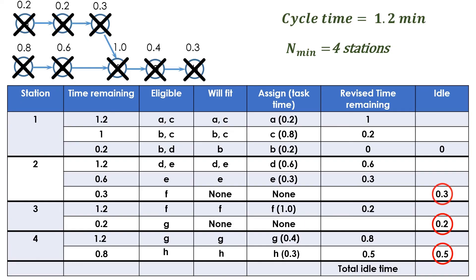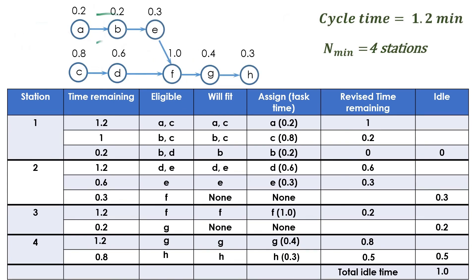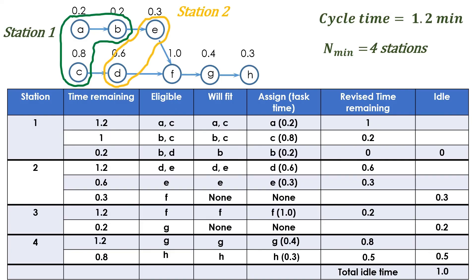The total idle time equals 0.3 plus 0.2 plus 0.5, equal to 1 minute. In conclusion, the 8 tasks were assigned to 4 stations with a total idle time of 1 minute. Tasks A, B, and C are assigned to station 1; tasks D and E are assigned to station 2; task F is assigned to station 3; and tasks G and H are assigned to station 4.